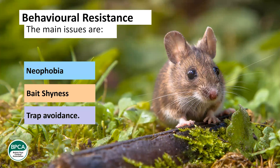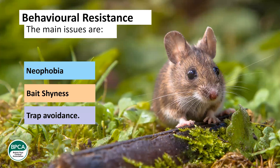Behavioral resistance: there are three main types. First, neophobia — brown rats commonly exhibit this at different levels. A city-centre rat may have lower neophobia than one that's lived in a field and never seen a person or bait box. It can take a number of days to overcome — up to two weeks for them to accept a new object in their environment. If you're setting up an external rodent treatment and don't see activity in boxes for the first couple of weeks before it starts building, that's a good indication of neophobia.